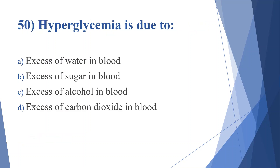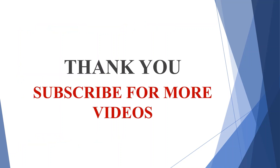And the last one, fiftieth question: hyperglycemia is due to. Option A: excess of water in blood. Option B: excess of sugar in blood. Option C: excess of alcohol in blood. Option D: excess of carbon dioxide in blood. Answer is option B, excess of sugar in blood.